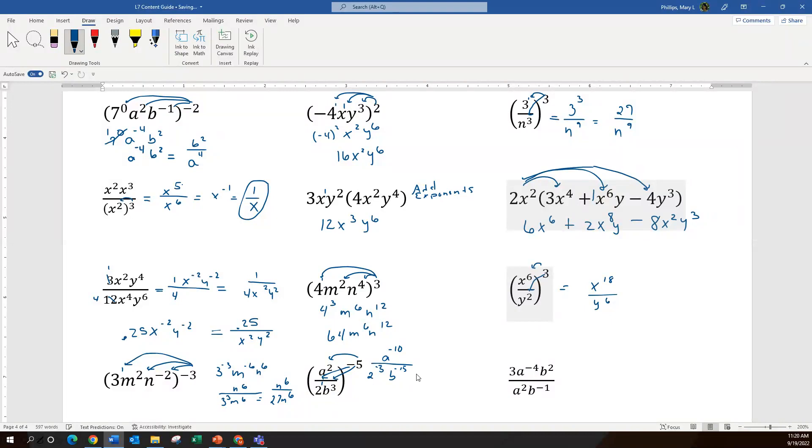I see that literally everything is negative, so I completely flip everything. So I have 2 to the 5th on top, b to the 15th on top, and a to the 10th on the bottom. And then I can go to my calculator and get a value, so 2 to the 5th is 32, b to the 15th divided by a to the 10th.